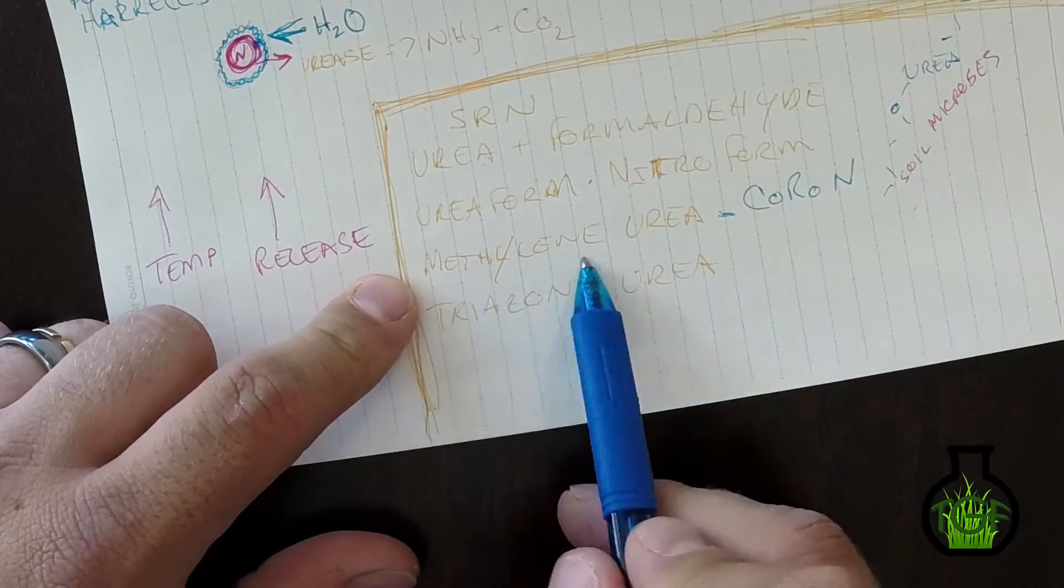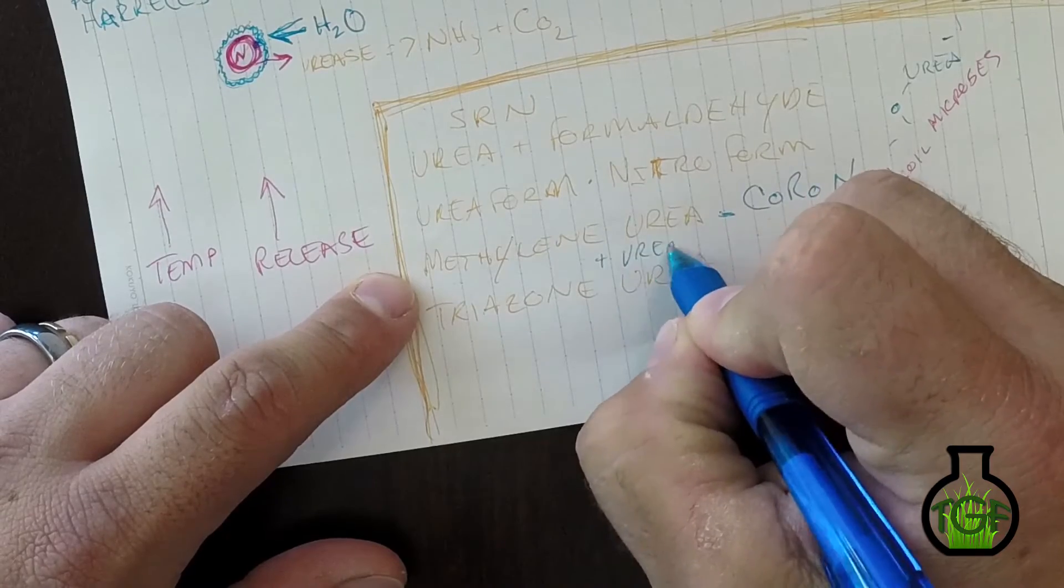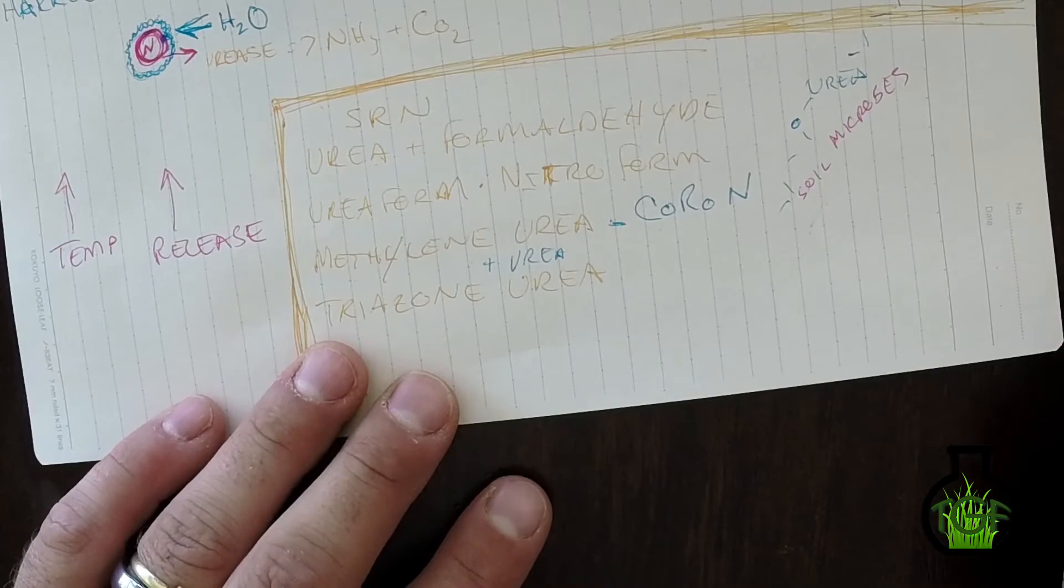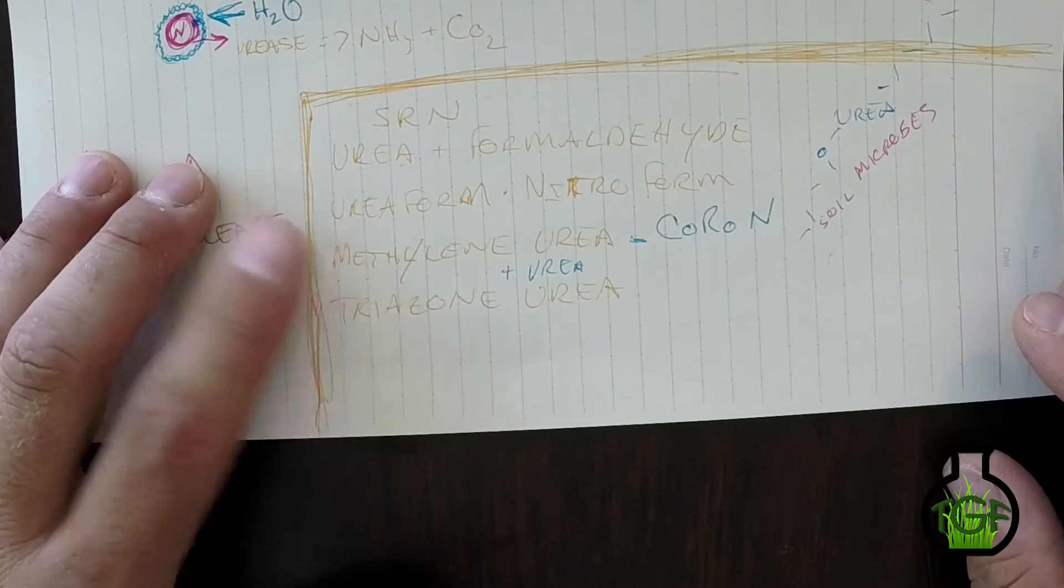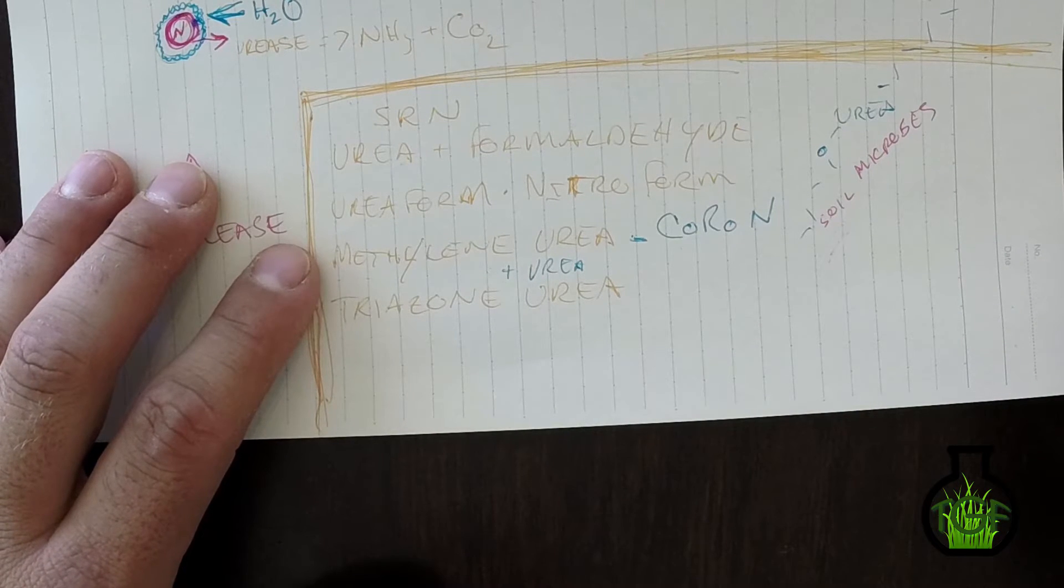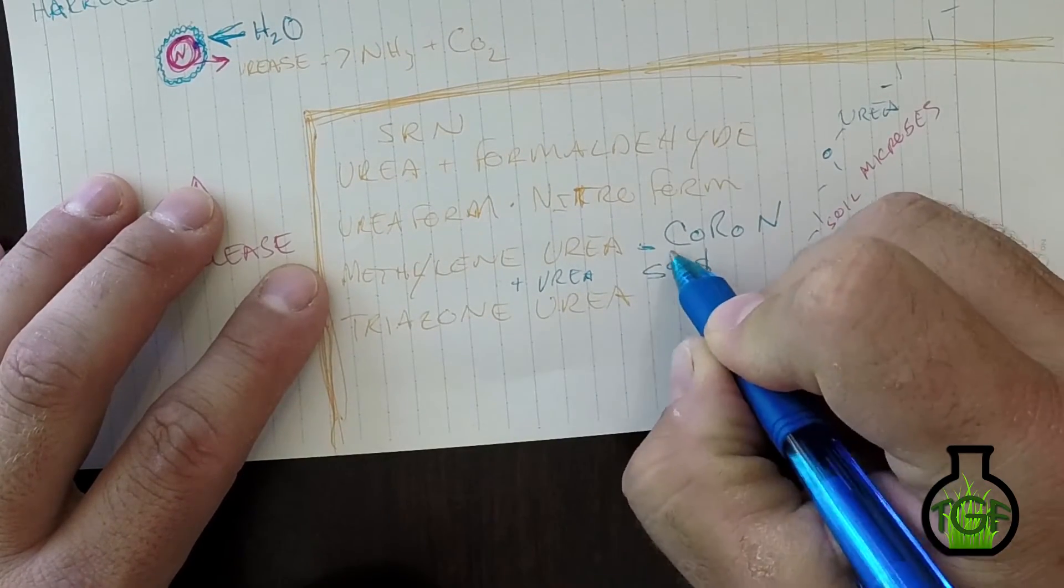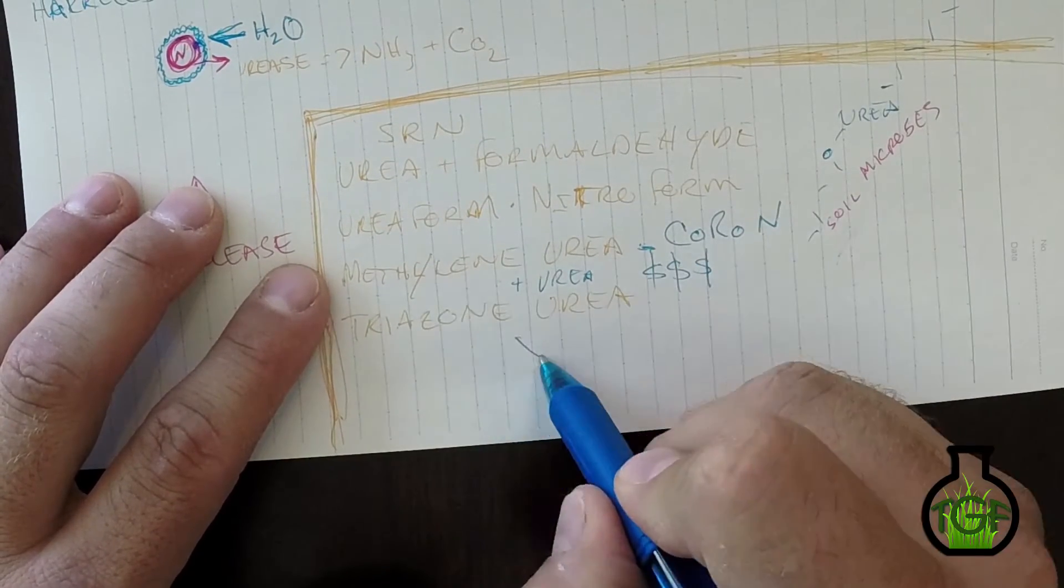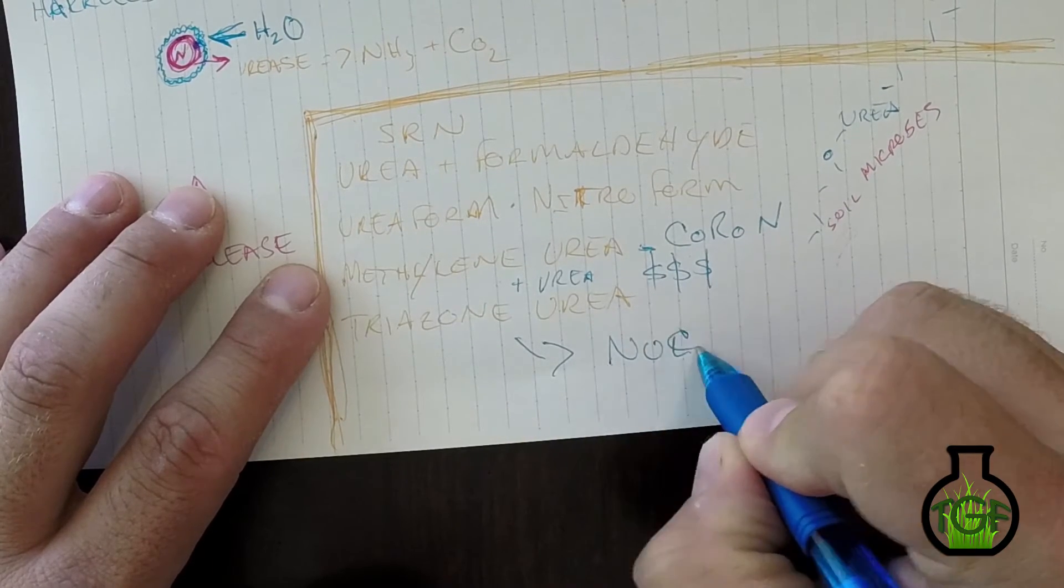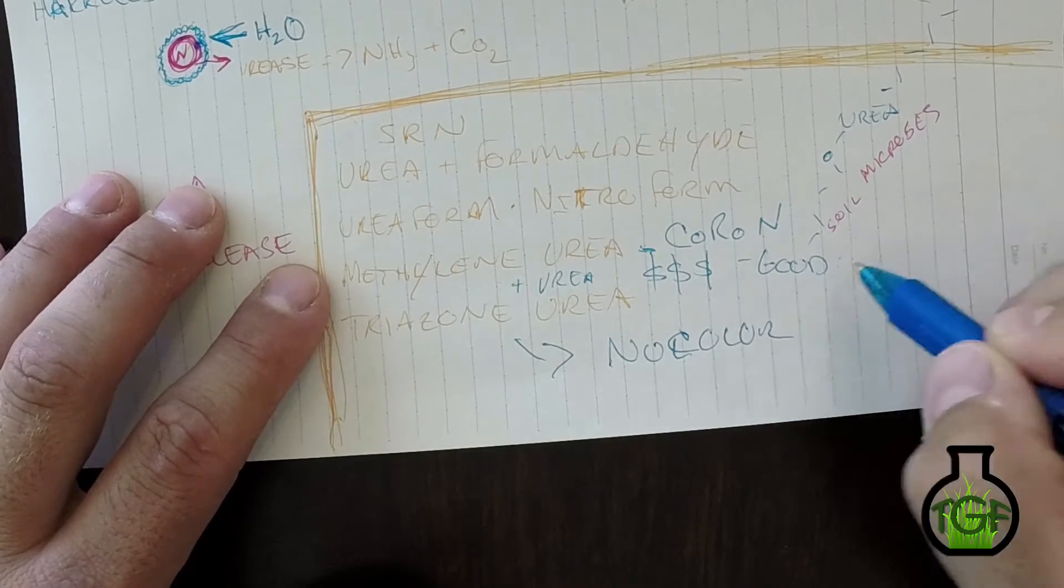One of the more popular products is going to be Helman's Choron, a controlled release nitrogen. It's actually a blend of methylene urea plus urea. There are several different people out there that produce these methylene urea slow release liquids. Again, they're very expensive. I do not like the color response from triazone urea—I got no color. I do get color response from methylene urea, it's good color.